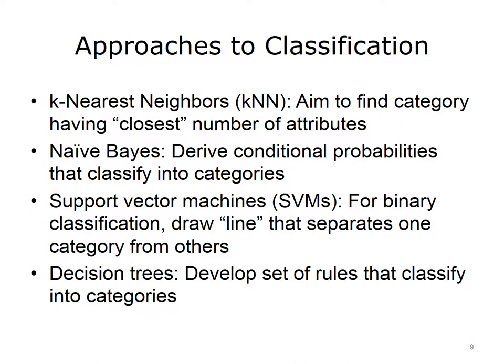There are a number of approaches used in machine learning for classification. Some of the most common algorithms are listed here. One common approach is K-Nearest Neighbors, or KNN, where we aim to find categories by determining the closest number of attributes as calculated via a distance measure, then classify the data by how closely they fit within each category. Another approach is Naive Bayes, which uses Bayes' theorem to derive conditional probabilities that classify data according to categories. Another common approach is Support Vector Machines, or SVMs, used for binary classification, where we model a line through the data that separates one category from the other using vector mathematics. Finally, there are Decision Trees, where we develop a set of rules to work through a decision tree to classify elements into categories.